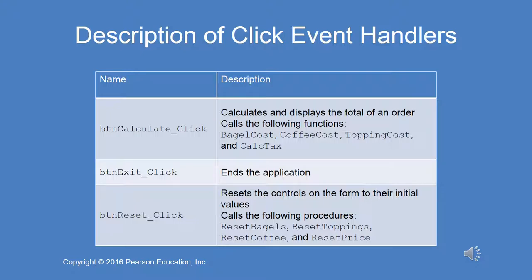You're going to have to write procedures for the three button click event handlers: the calculate, exit, and reset button click event handlers. The click event handler for the calculate button is going to calculate and display the total of an order. It will call four different functions: bagel cost, coffee cost, topping cost, and calc tax.